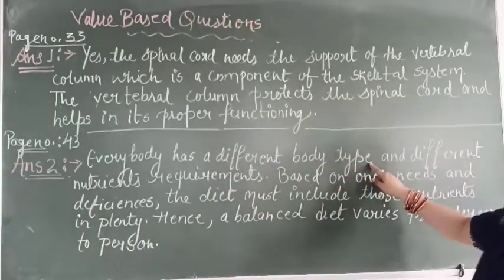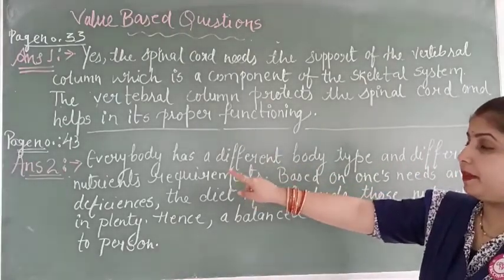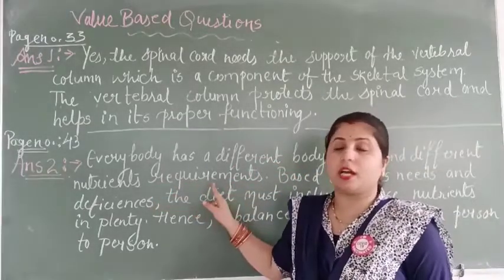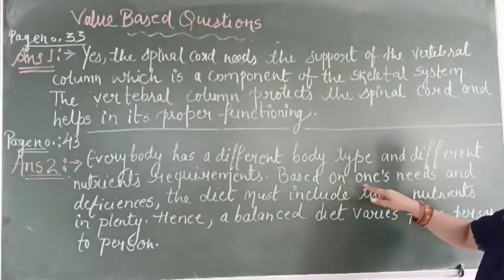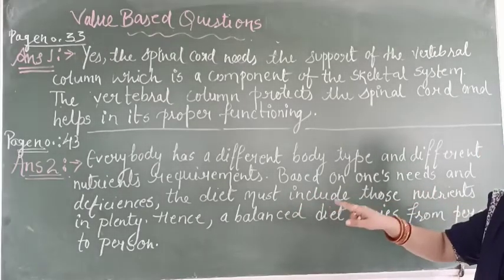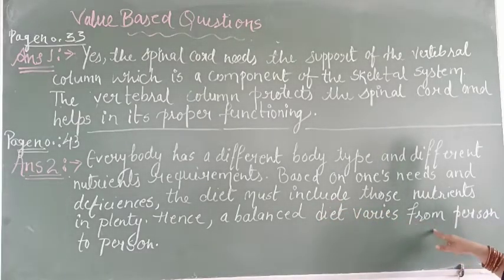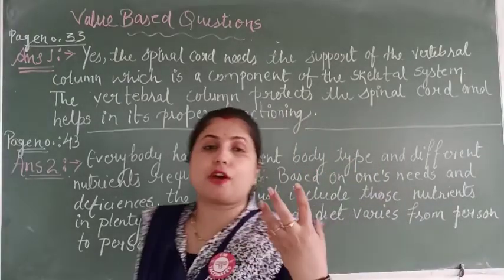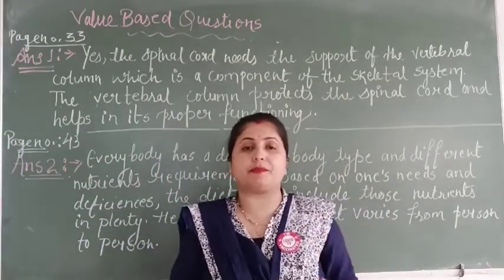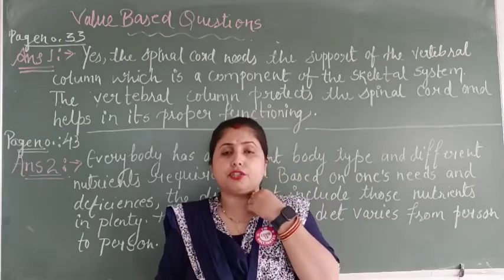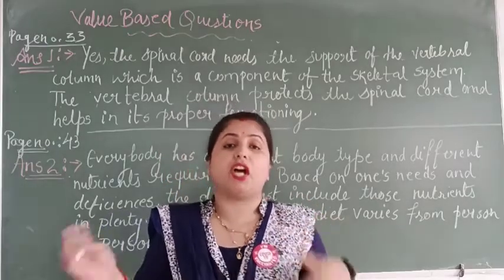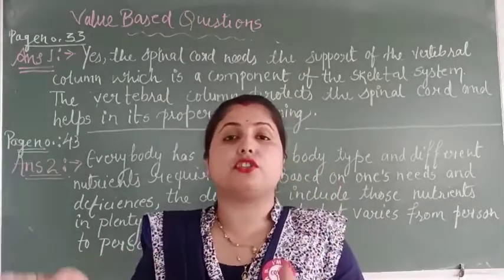The answer is: Everybody has a different body type and different nutrient requirements. Based on one's needs and deficiency, the diet must include those nutrients in plenty. Hence, a balanced diet varies from person to person. If somebody is suffering from some deficiency — a lack of vitamins, carbohydrates, or protein — that person needs more food which is rich in that particular nutrient.